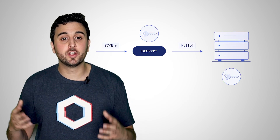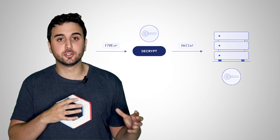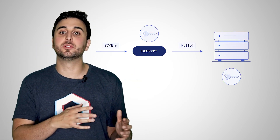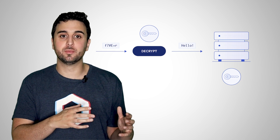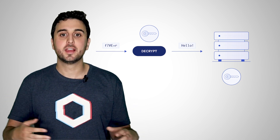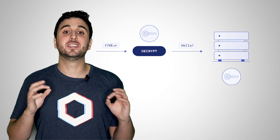The process of converting that unintelligible data back into its original form for the intended recipient is called decryption. The internet and modern computers heavily rely on encryption as a critical element in their security models.